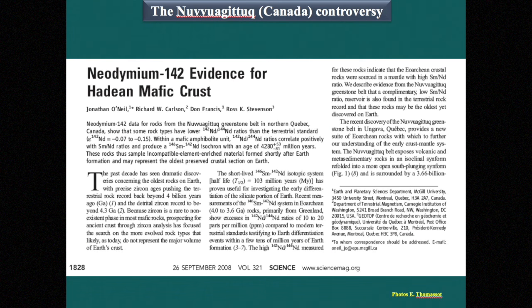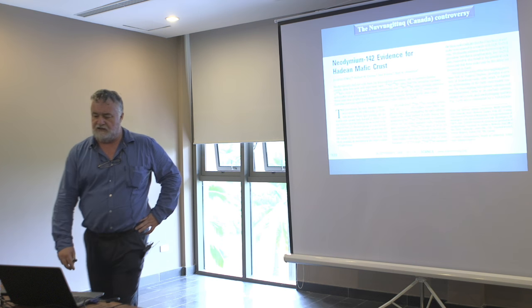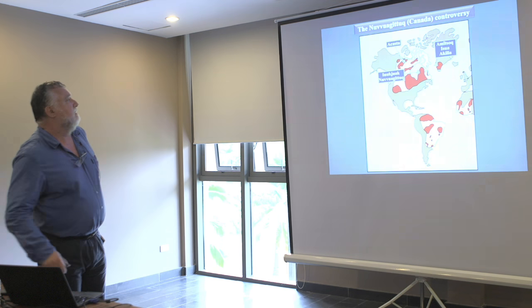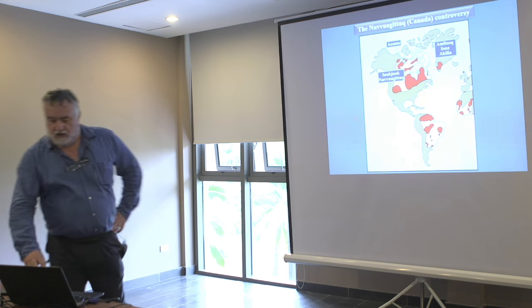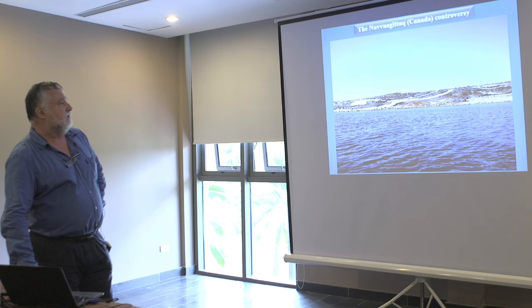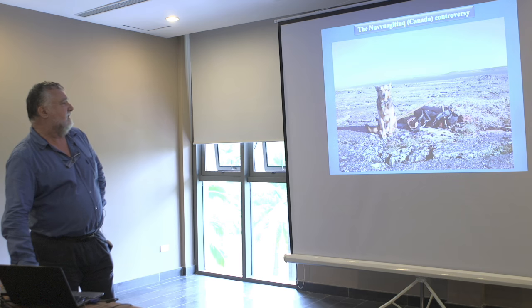Perhaps you have seen this paper, published in 2008, which says that there is evidence for Hadean mafic crust — also in Canada. They give ages of about 4.3 billion years. The place is Nuvvuagittuq, on Hudson Bay in Quebec province, Canada, where the outcrops are of very good quality.